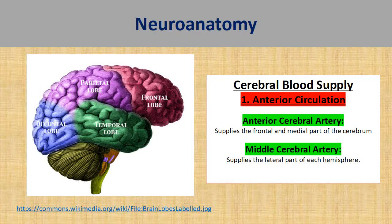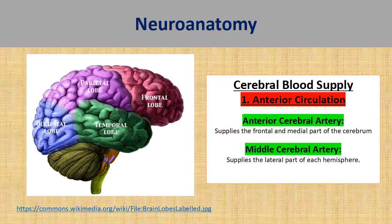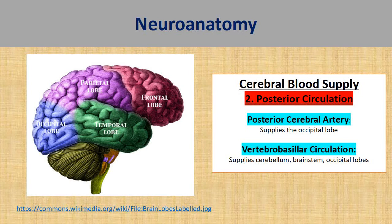The cerebral blood supply can be divided into two systems: anterior circulations and posterior circulations. The anterior circulation consists of the anterior cerebral artery (ACA) and the middle cerebral artery (MCA). The ACA supplies the frontal lobe as well as the medial part of the cerebrum, while the MCA supplies the lateral part of each hemisphere. The posterior circulation consists of the posterior cerebral artery, which supplies the occipital lobes.